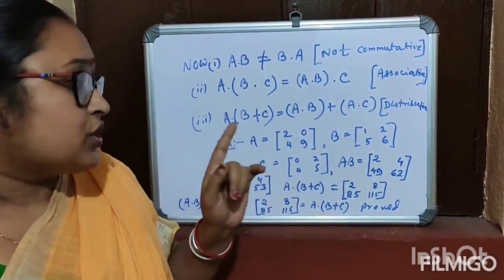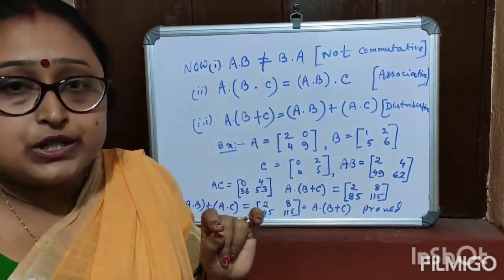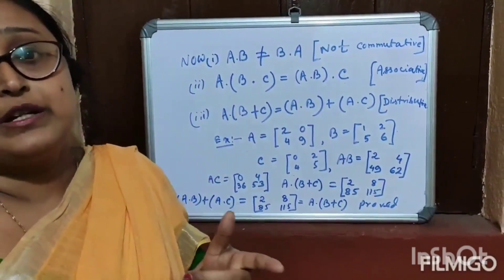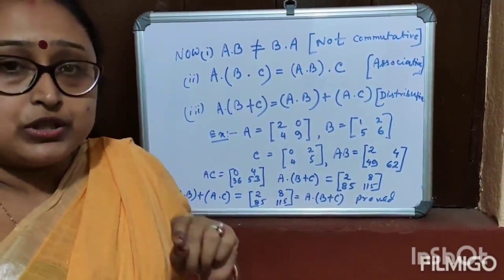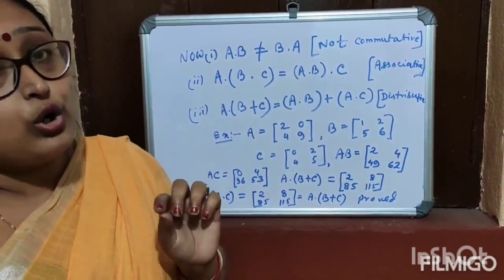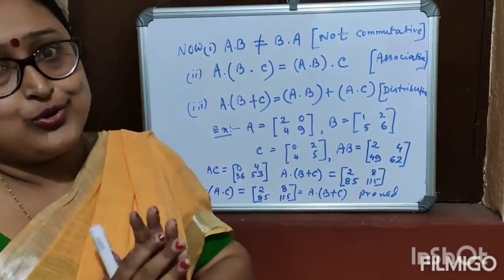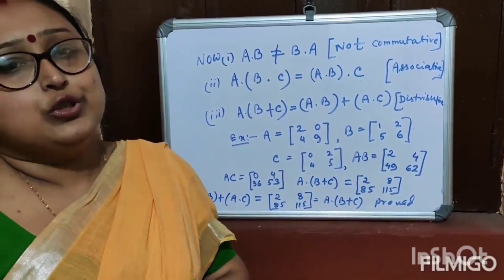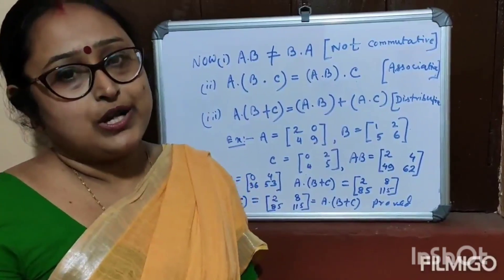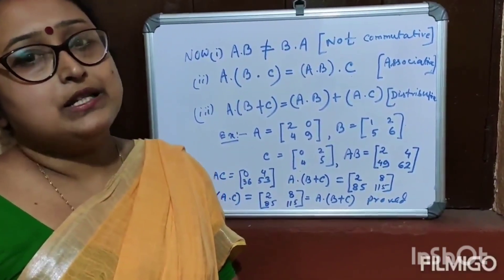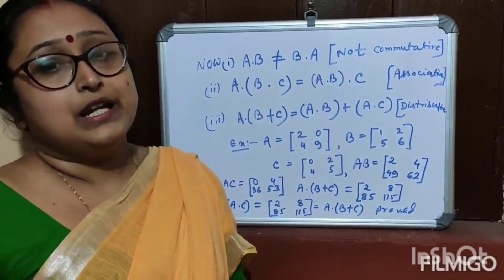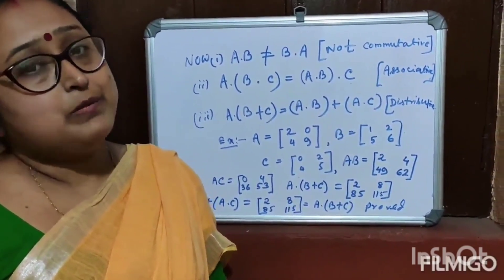Matrix multiplication is commutative? No. Matrix multiplication is distributive? Yes. Matrix multiplication is associative? Yes. That's all for today. Thank you. If you liked the video, please like, comment, and subscribe. I will show you the next video on matrix.